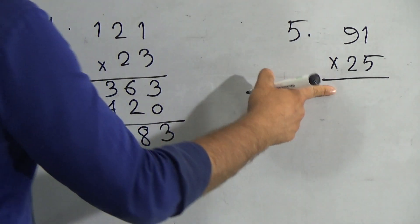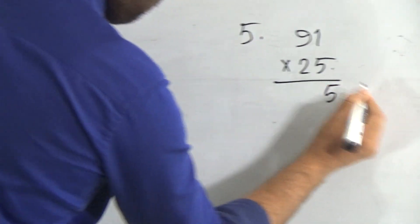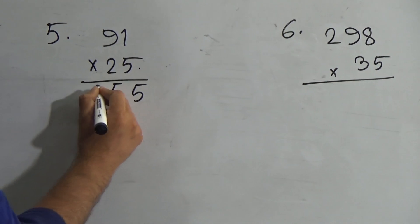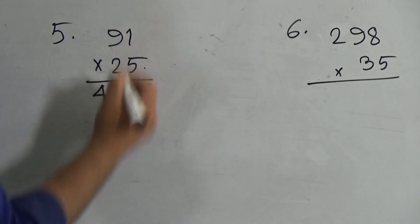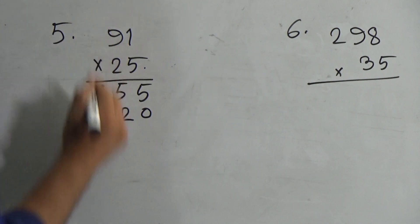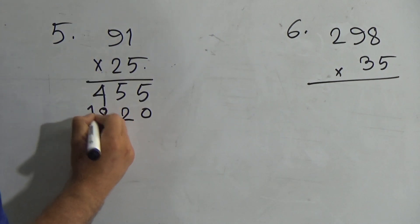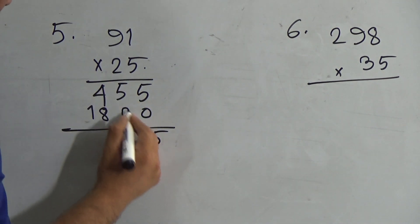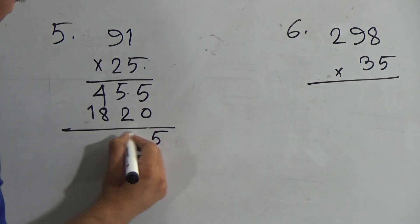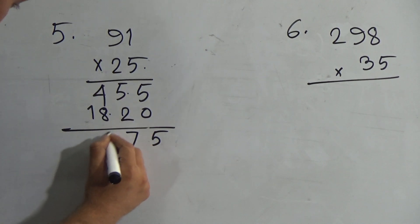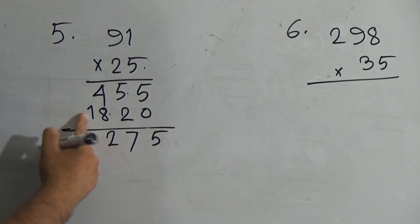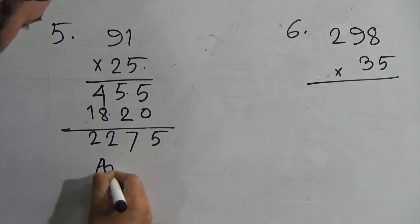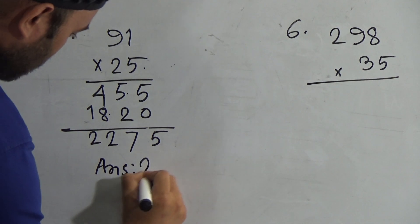Now question number five: five ones are five; five nines are forty-five. Now here use zero: two ones are two; nine twos are eighteen. Now add: five and zero is five; two and five is seven; four and eight is twelve, carry one; one and one is two. So the answer will be two thousand two hundred seventy-five.